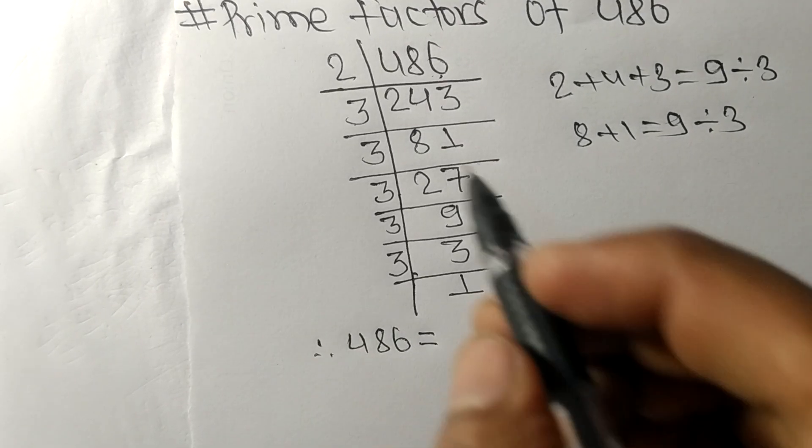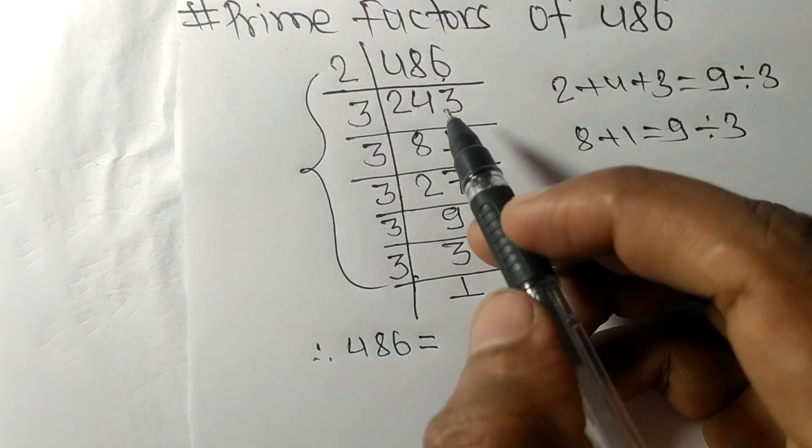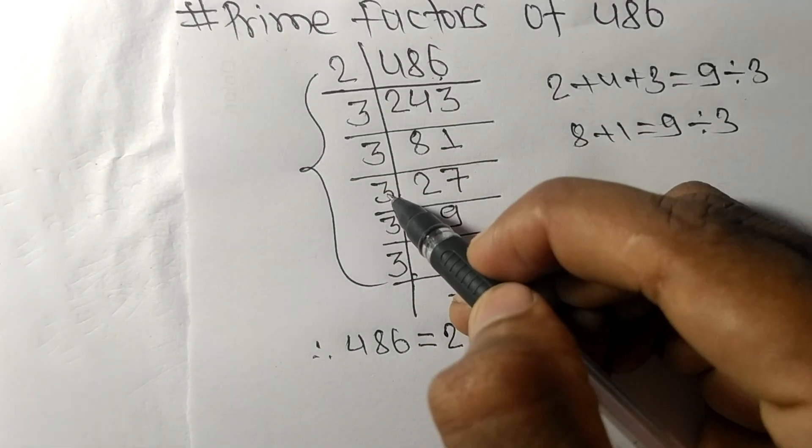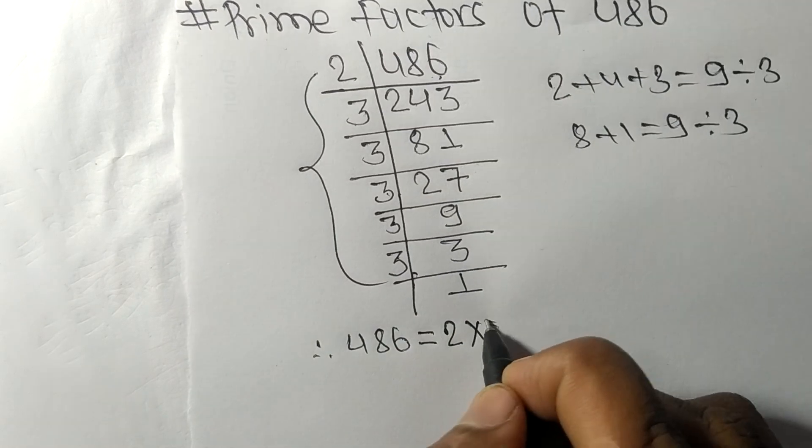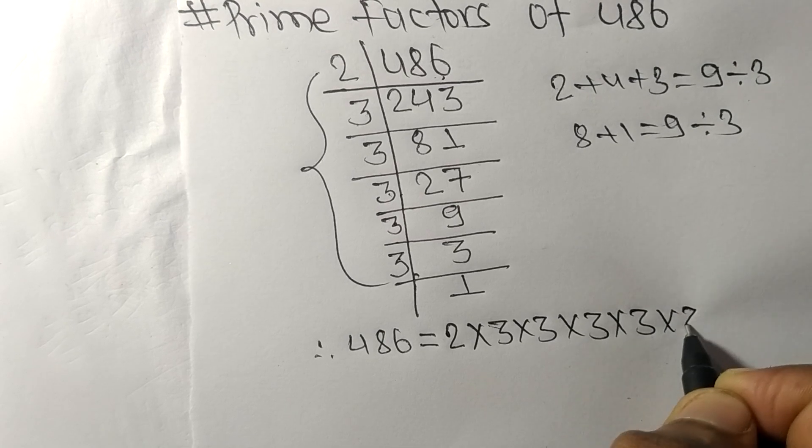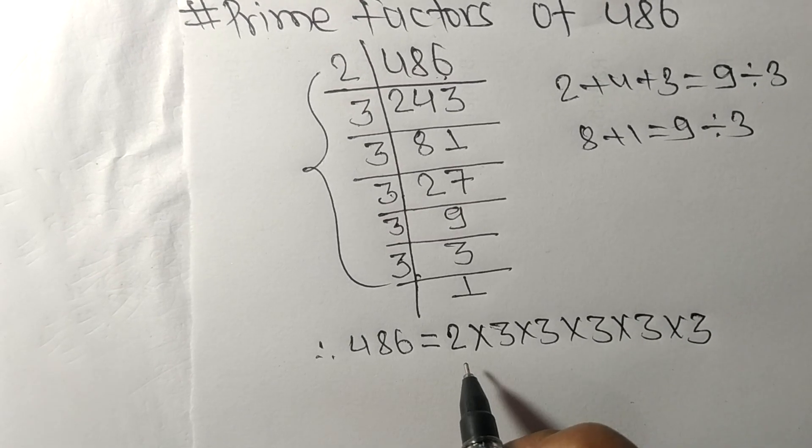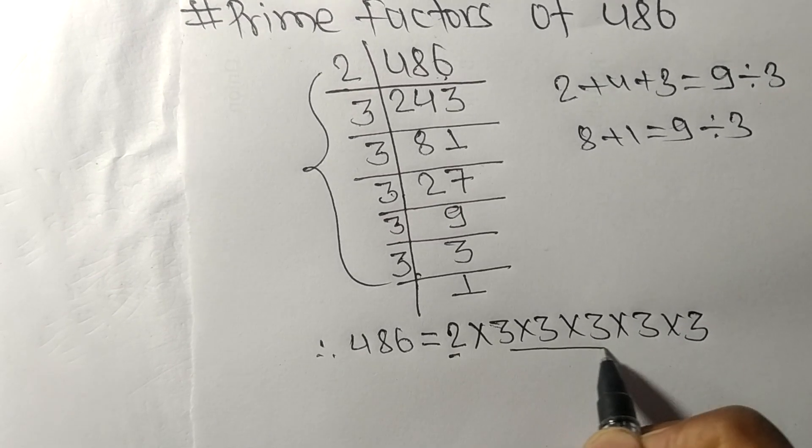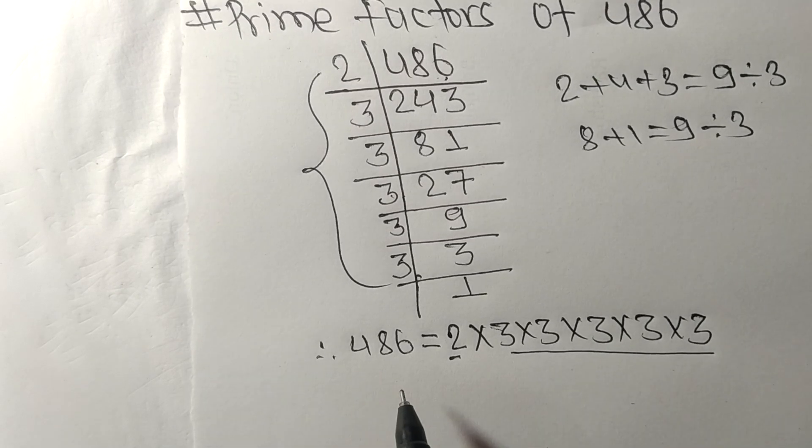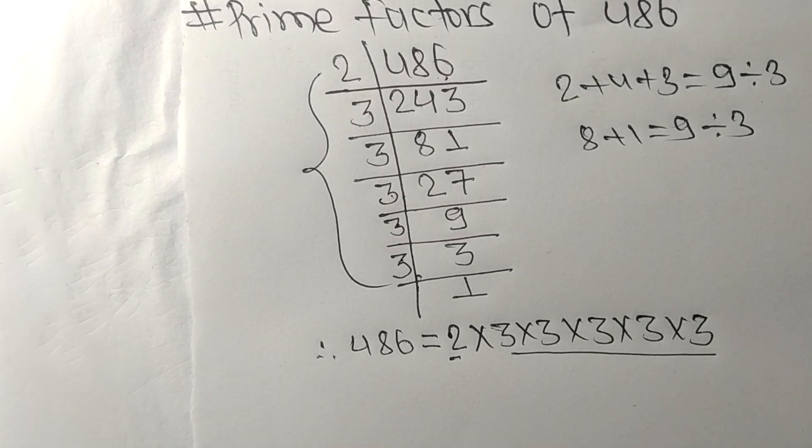From this side we have 2, and 1, 2, 3, 4, 5 times 3. So 2 and 3 are the prime factors of 486. That's all for today, and thanks for watching.